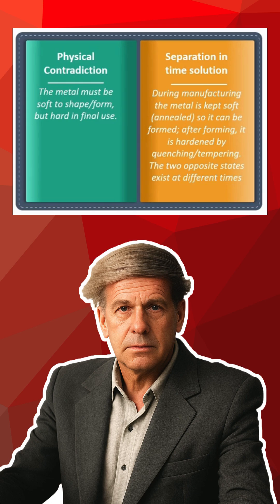The separation in time solution works as follows: during manufacturing, the metal is kept soft so it can be formed — you heat the metal to make it soft so it can attain the required shape. After forming, it is hardened by techniques like tempering or quenching, so the two opposite states exist at two different times. This is what we call separation in time.